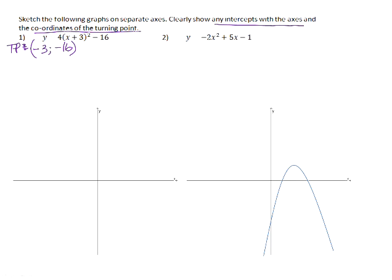The x-intercepts are the points where y is equal to 0, so we substitute y for 0 and solve for x. If we add 16 to both sides and divide both sides by 4, we'll get 4 is equal to (x + 3)² .